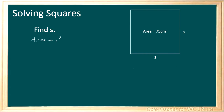For example, if you take a number n and both square it and take the square root of it, you're left with just n. Similarly, if you take that same number n and both multiply it by 2 and divide it by 2, you're also left with just n.